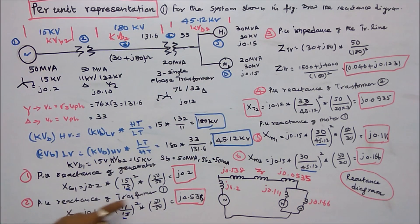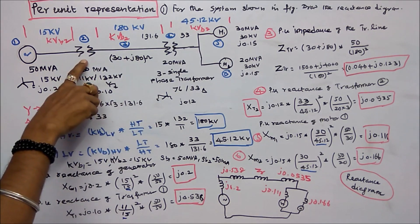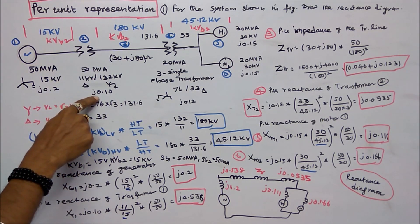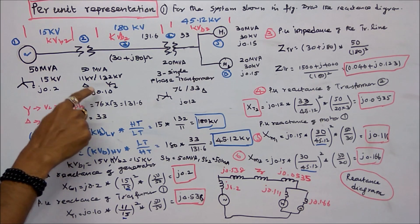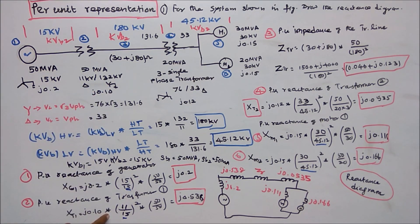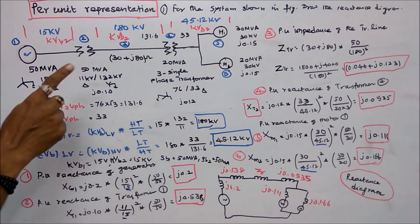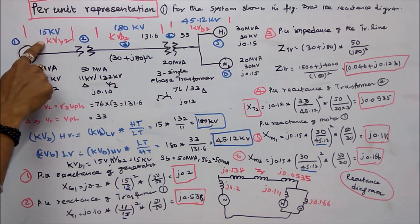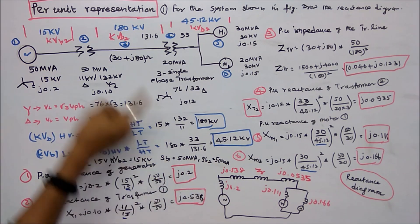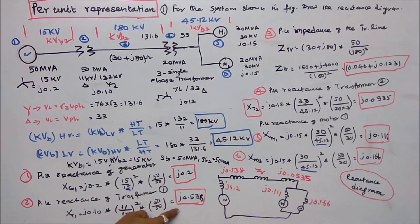Second, per unit reactance of transformer T1. Actual leakage reactance is J0.10. Per unit equals J0.10 into (VB1/VB2) squared, where VB1 is 11 (given) and VB2 is 15 (chosen), so (11/15) squared, times SB2 50 divided by given value 50. That equals J0.0538.